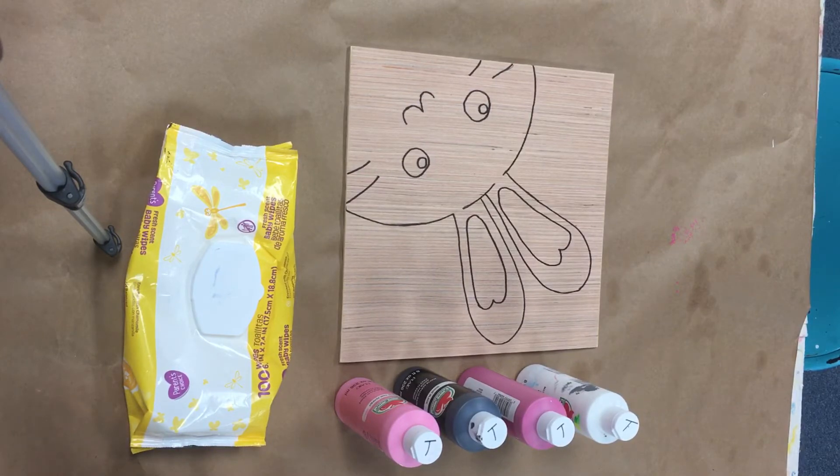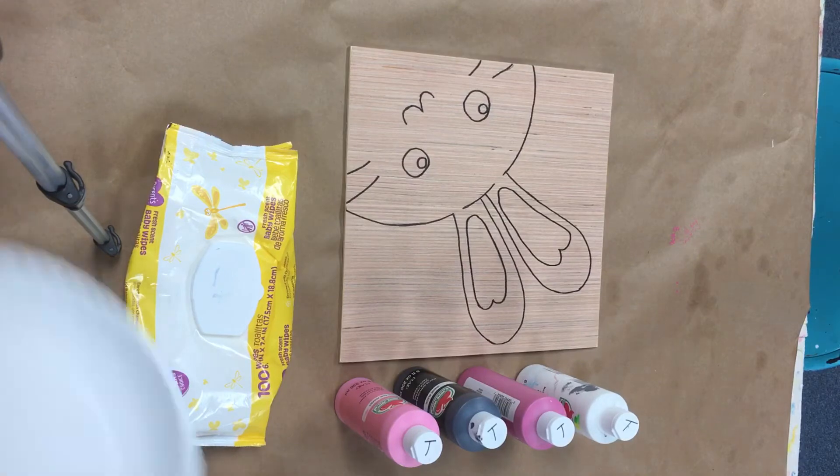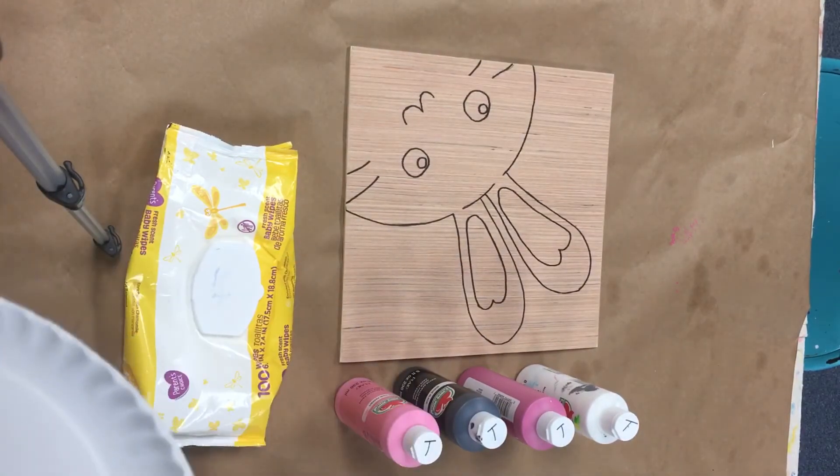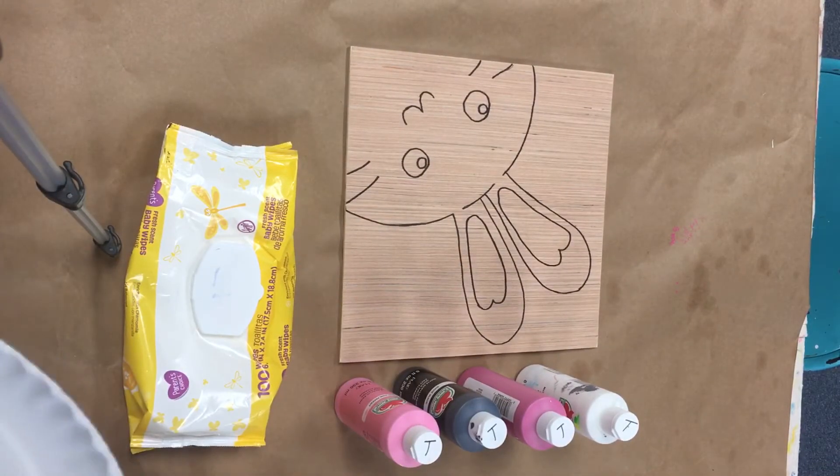Another thing you're going to need is you want to make sure that you have some type of an item where you can mix paint colors. Sometimes you have to do shading. When we do shading, we're going to add some white to make it lighter or some black to make it darker. I like to use a paper plate.